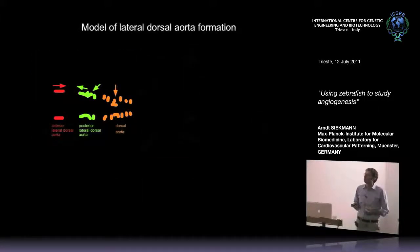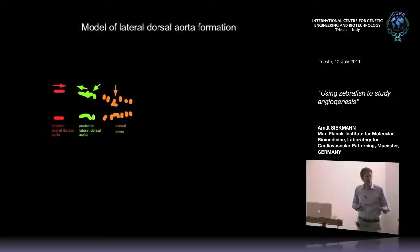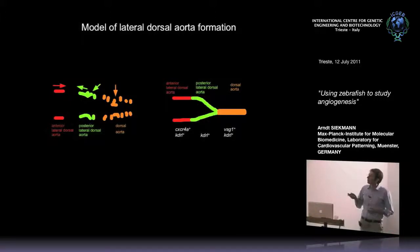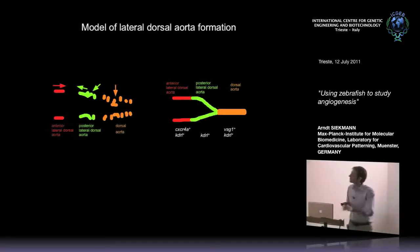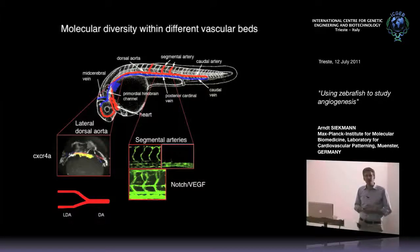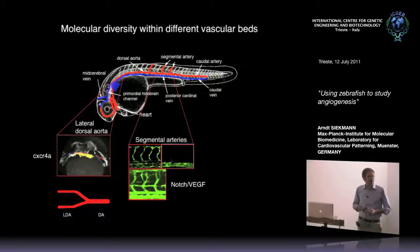To summarize, our time-lapse analysis showed that the first aorta in the embryo is comprised of endothelial cells from different origins - anterior and posterior - showing distinct migratory behaviors. We identified genes specifically expressed only in the anterior or posterior region of the dorsal aorta, and this expression is critical for proper structure formation. In CXCR4A mutants, the posterior cells still migrate but the anterior ones cannot fuse with them. This gives us three distinct genetic pathways: VEGF/Notch signaling for segmental arteries, and CXCR4A for lateral dorsal aorta formation.